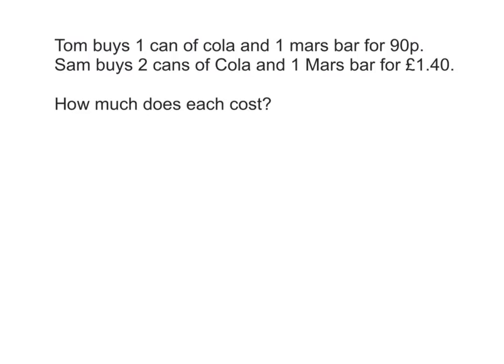So if you have a look at this, we'll do it just using common sense to begin with. Hopefully you can see that the only difference between what they buy is that Sam buys one extra can of cola. If you then look at the price they both pay, you'll see that Sam pays an extra 50p on top of what Tom pays. So hopefully you'll then see that a can of cola must be 50p.